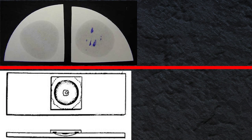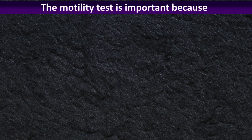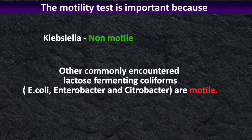The oxidase test and motility test give negative results. The motility test is important because Klebsiella is non-motile, while other commonly encountered lactose-fermenting coliforms such as Escherichia coli, Enterobacter, and Citrobacter are motile.